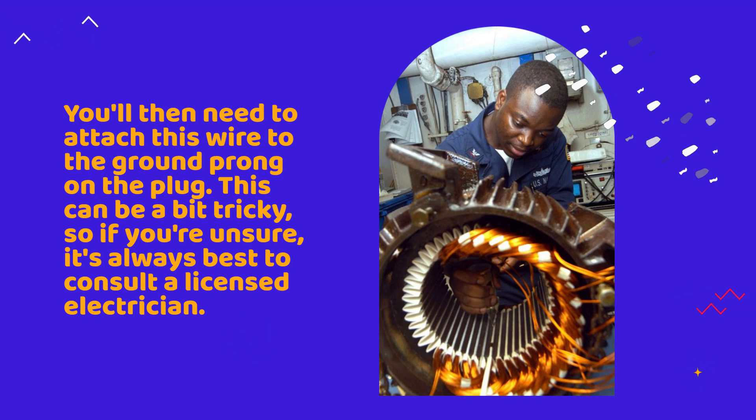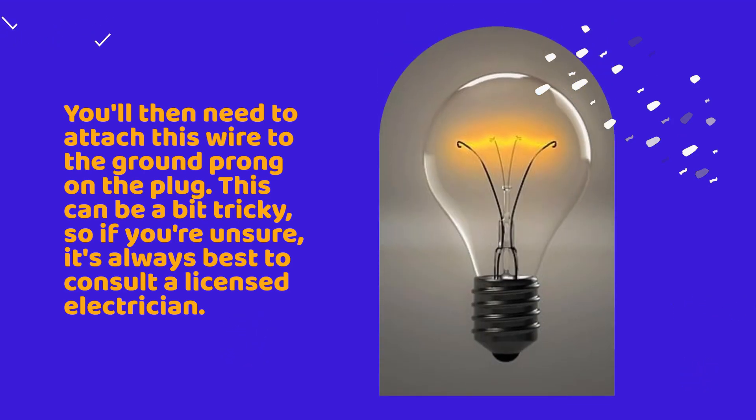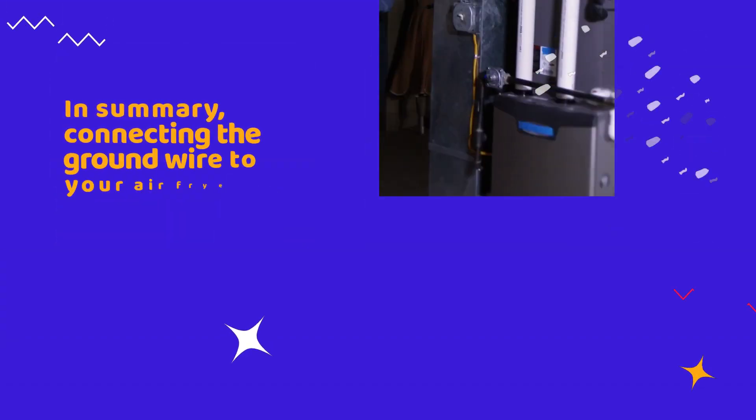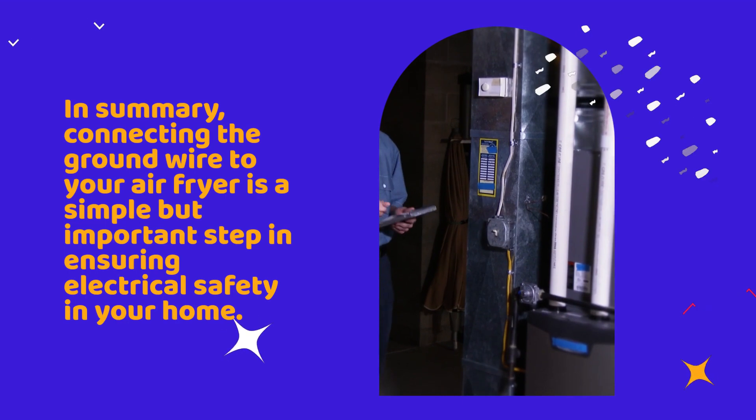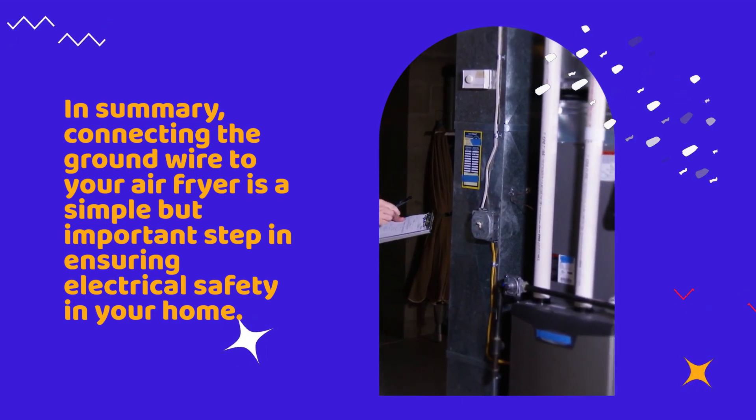In summary, connecting the ground wire to your air fryer is a simple but essential step in ensuring electrical safety in your home. It helps to prevent electric shock and keeps you and your family safe, especially in appliances with metal components like air fryers.